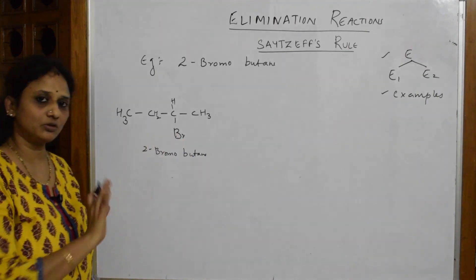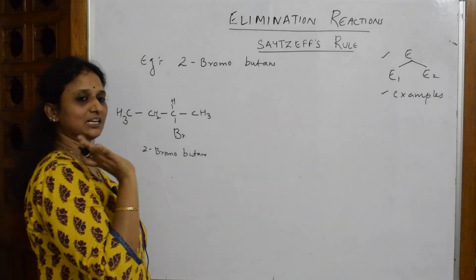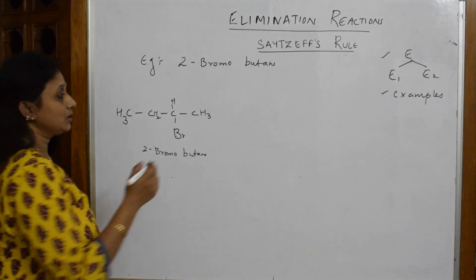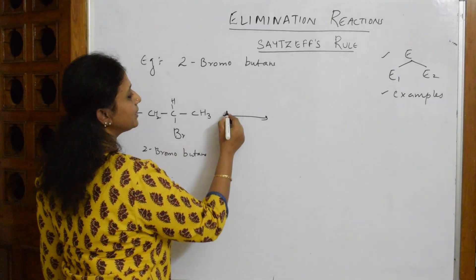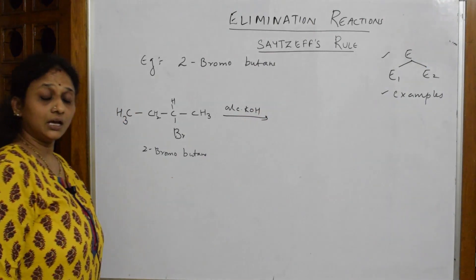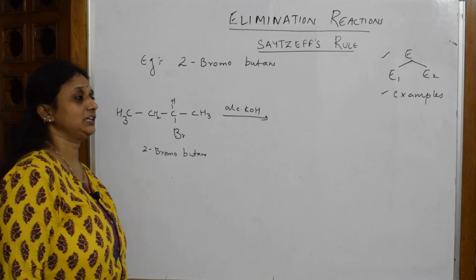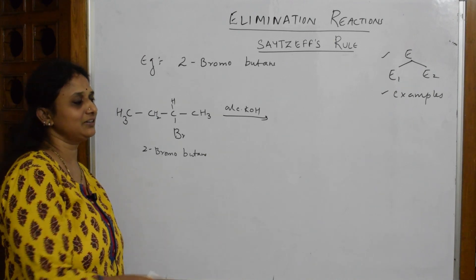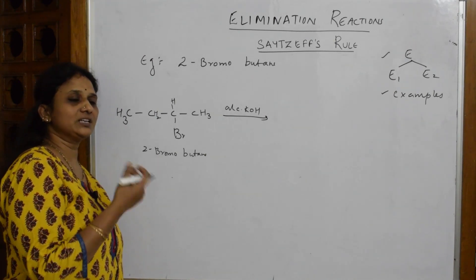Now I'm going to introduce the strongest base: alcoholic KOH. Alcoholic KOH is a strong base which follows E2 mechanism that we have been studying. We have already done some examples with that. Elimination reactions should be dehydrohalogenation - that is what should happen.